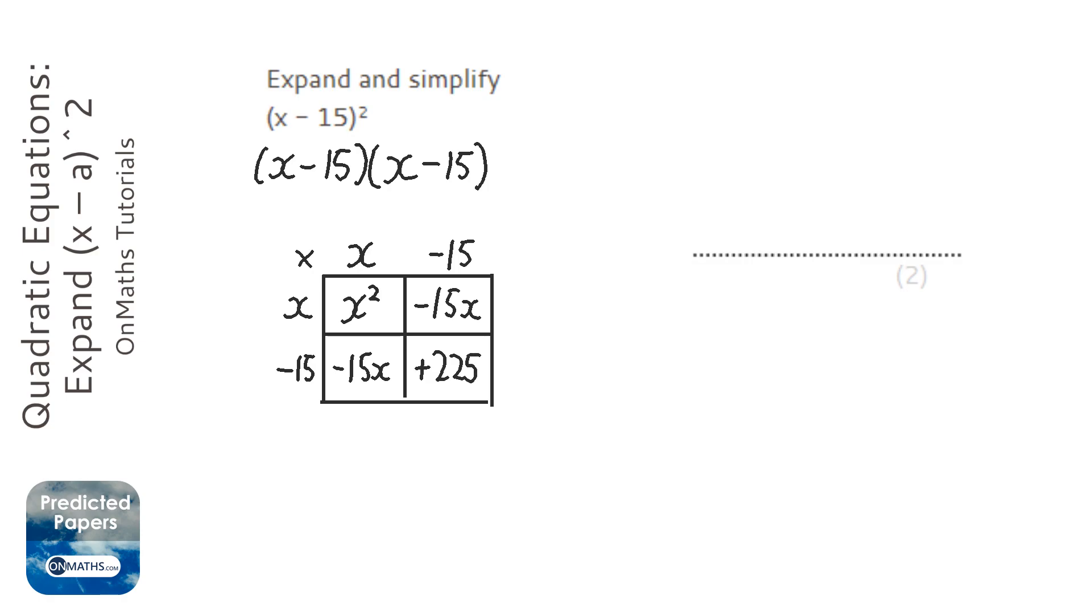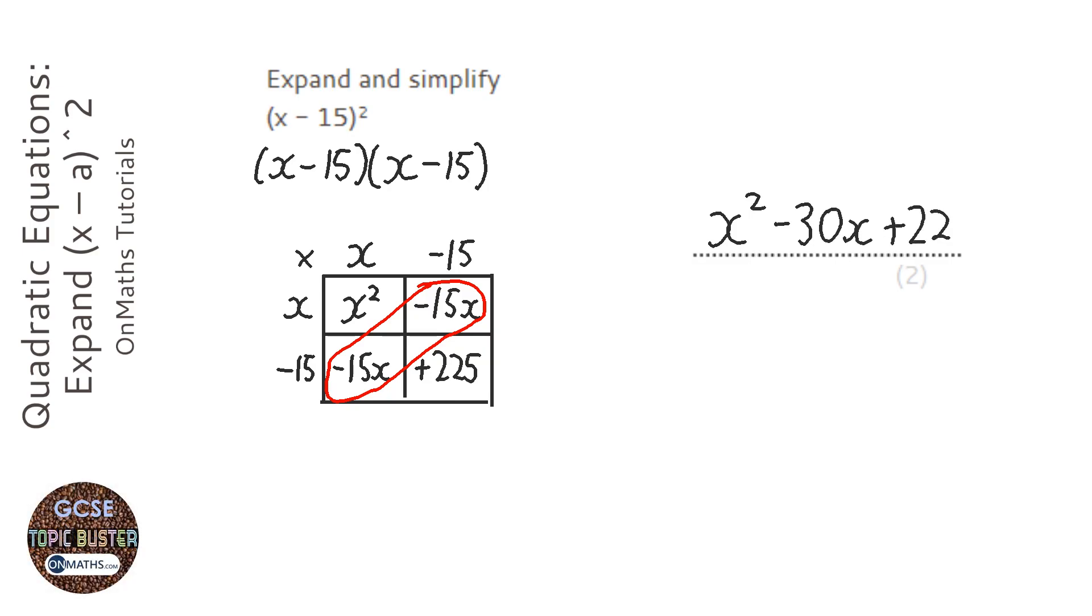Okay, then these two here we'll add together. So when we write our answer it's x squared minus 30x plus 225.